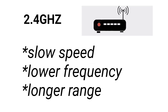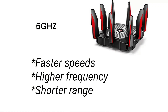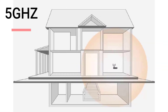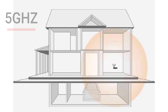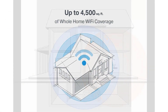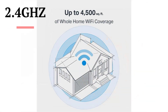The 2.4 gigahertz band transmits data at a slower speed because it has a lower frequency, hence a longer range. The 5 gigahertz band transmits data at a faster speed because it has a higher frequency and a shorter range. Higher frequencies cannot penetrate walls and buildings, making the 5 gigahertz band cover a smaller area compared to the 2.4 gigahertz band.